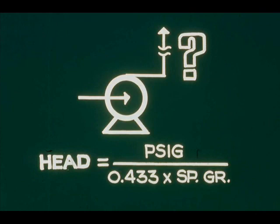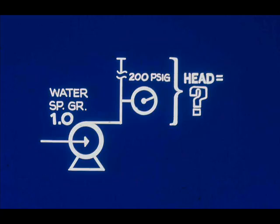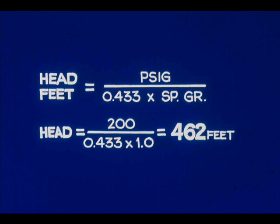Now let's calculate the head in feet that a centrifugal pump will put up by using the formula: head in feet equals the pressure divided by the product of 0.433 times the specific gravity. We will use the same liquids — water, kerosene, and light naphtha. What is the head in feet when pumping water, specific gravity 1.0, if the discharge pressure is 200 psig? Substituting 200 for p and 1.0 for specific gravity, we get 462 feet.